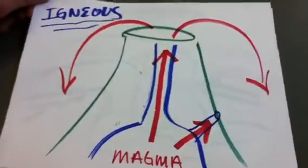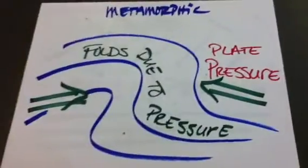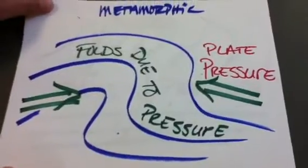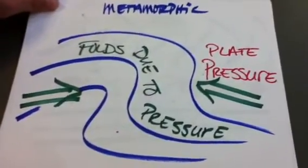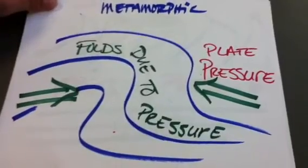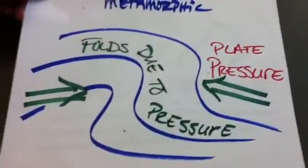After igneous rocks are formed, they can undergo heat and pressure, turning them into metamorphic rock. Metamorphic rock can be formed when two plates come together, creating folding, heat, or pressure.